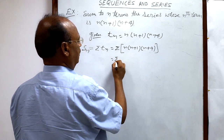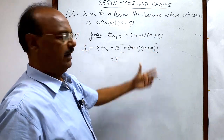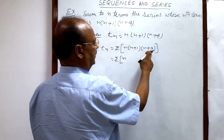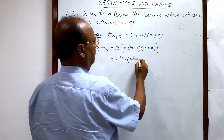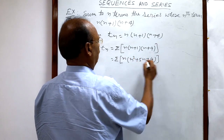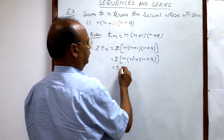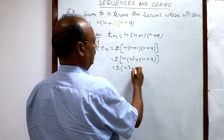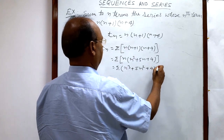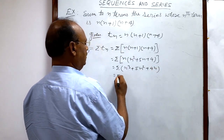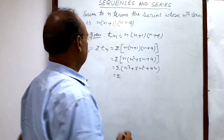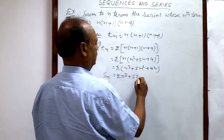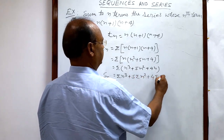This is equal to sigma of — first of all we will multiply these factors. So, n plus 1 into n plus 4 gives n squared plus 5n plus 4, and multiplying this with n gives n cubed plus 5n squared plus 4n. This sigma will be distributed over all the terms, so the sum of n terms will be sigma n cubed plus 5 sigma n squared plus 4 sigma n.